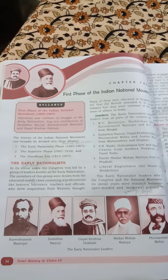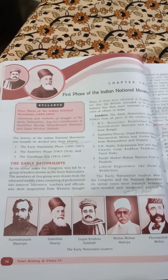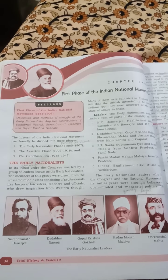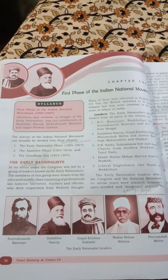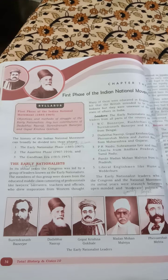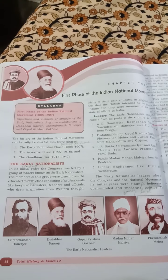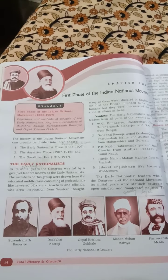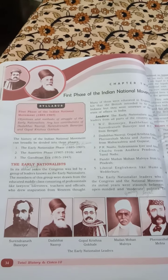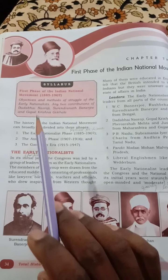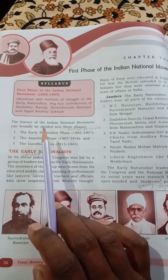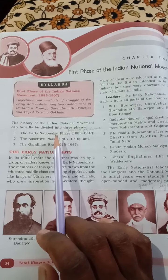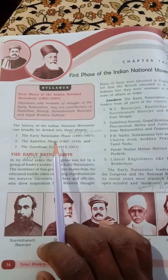They are also called moderates because in nature they were very moderate, fair, and loyal to the British. They did not speak any wrong thing or give any statement against British policy. The history of the Indian National Movement can be broadly divided into three phases.